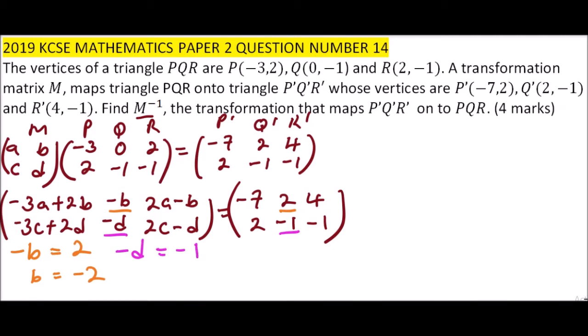The same, we can say -D is the same as -1. So -D equals -1. Divide both sides by -1, you get D equals 1. Now we have the values of B and D.